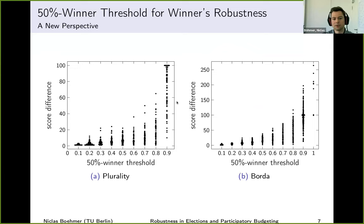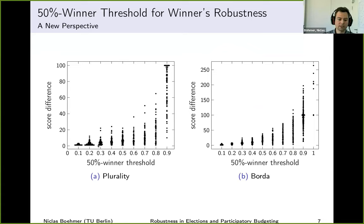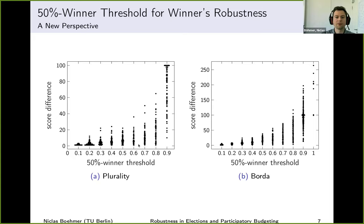The first question was: did we establish a new perspective, or is this the score difference all over again? Looking at a correlation plot — each point corresponds to an election — we see the 50% winner threshold on the x-axis and score difference on the y-axis. There is some correlation, but especially for low score differences, basically everything can happen. For a score difference of five, it could be a 50% threshold of 0.1 — meaning just three random swaps can change the election winner — or 0.8, meaning very many swaps are needed.